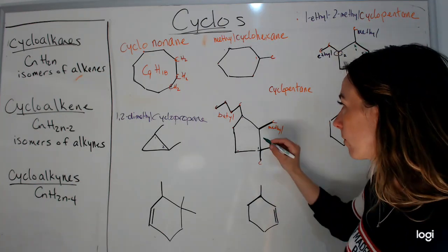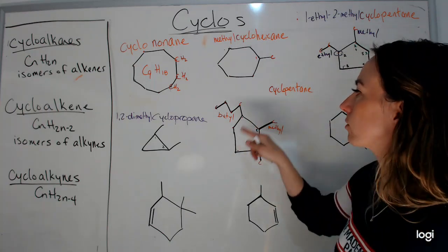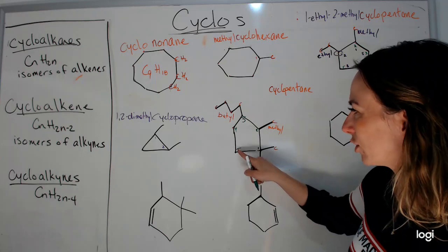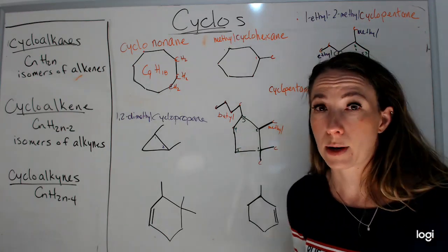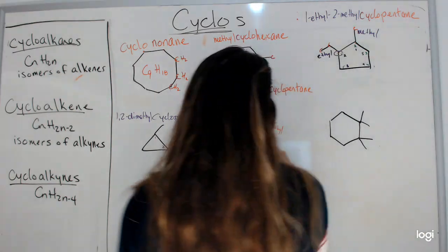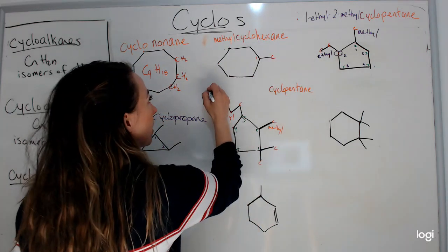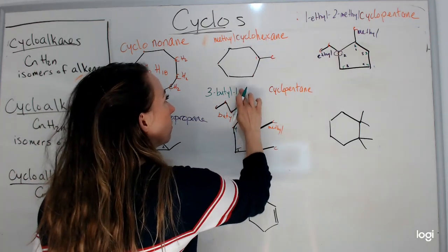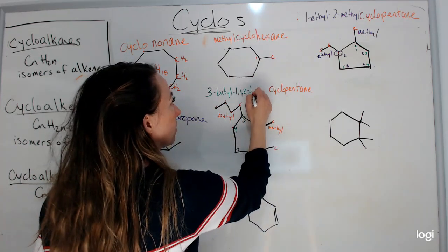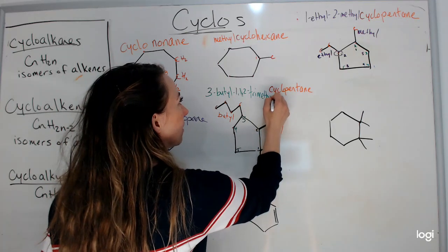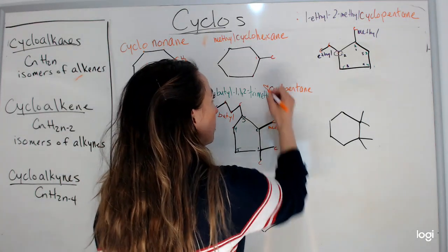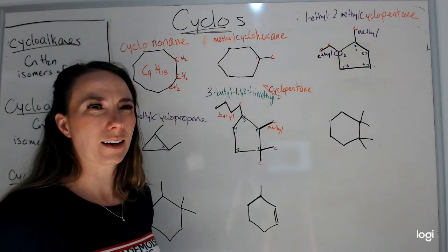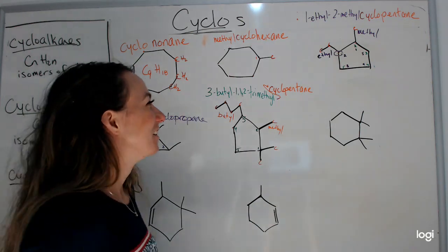Carbon 1 has two branches, so we go clockwise to hit more branches sooner: 1, 2, 3, 4, 5. Butyl is written first because it comes first in the alphabet, so this is 3-butyl-1,1,2-trimethylcyclopentane.